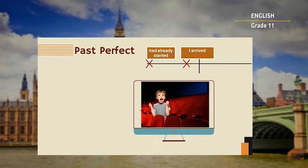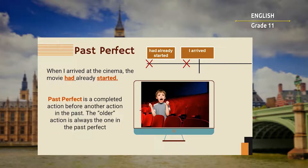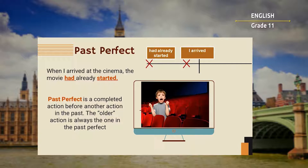Let's look at the next example: When I arrived at the cinema, the movie had already started. The past perfect tense describes completed events that took place in the past before another past event. We use it to make the story more interesting and easy to read. It is a completed action before another action in the past. The older action is always the one in the past perfect.